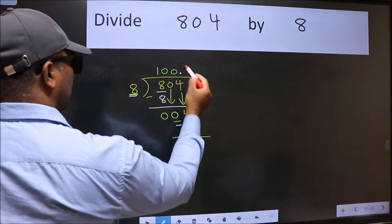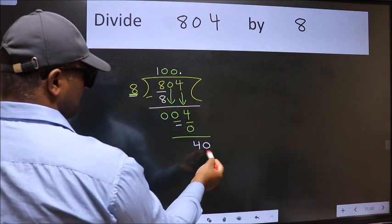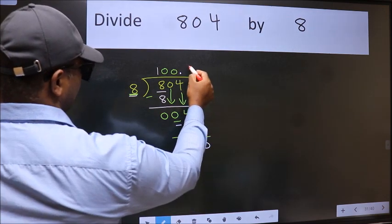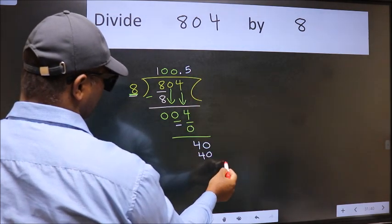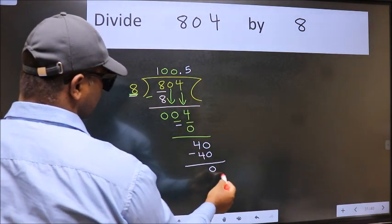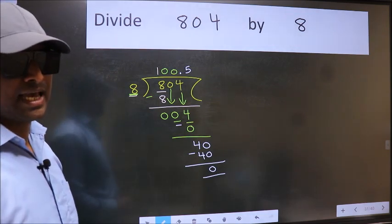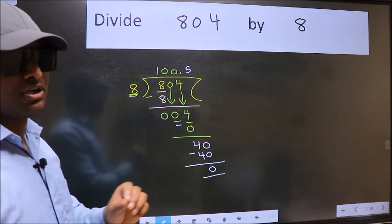So now we can put the decimal and take 0, so 40. When do we get 40 in the 8 table? 8 fives is 40. Now we subtract, we get 0. Did you understand where the mistake happens? You should not make that mistake.